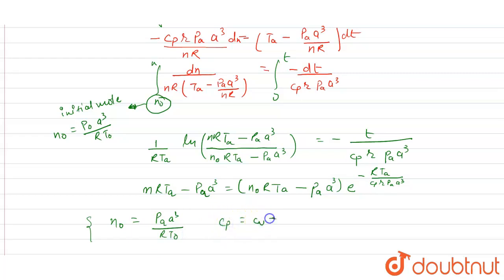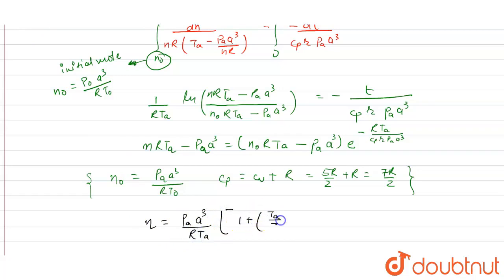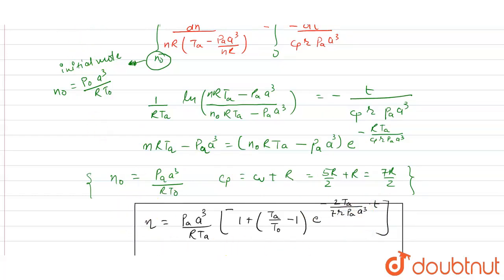Cp is calculated from Mayer's equation: Cp = Cv + R = 5R/2 + R = 7R/2. Putting these values in the above equation, the number of moles is: N = Pa·A³ / (R·TA) × [1 + (TA/T0 − 1) · e^(−2TA·t / (7R·Pa·A³))]. This is the required equation.